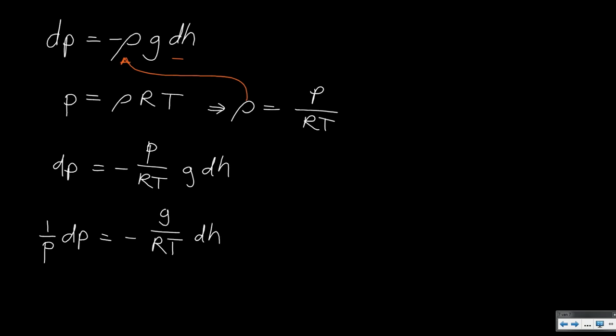The left side now looks manageable, but on the right side we still have the temperature, which will vary. R and g remain constant, but we have dh, so we need the relation between temperature and altitude. From the graph we saw that temperature changes linearly, which means we can write the temperature at any altitude 1 as a starting temperature plus the temperature gradient times the difference in altitude.